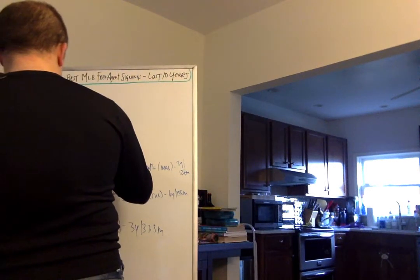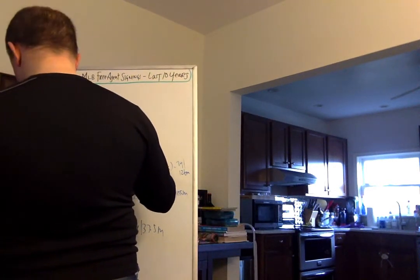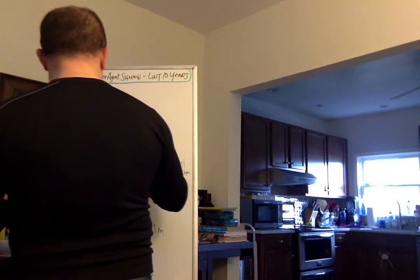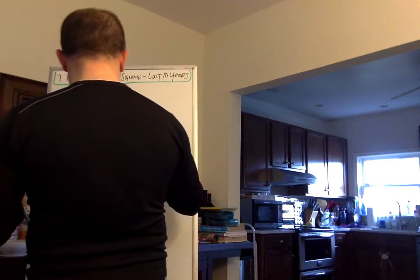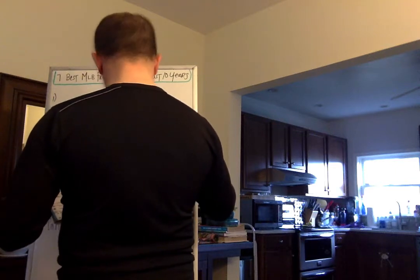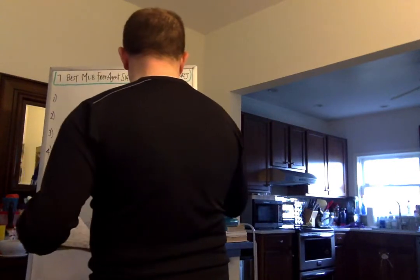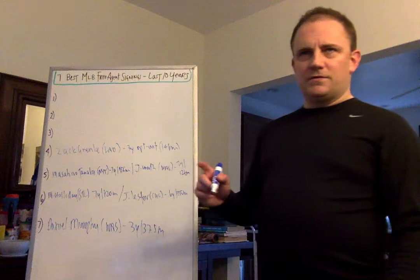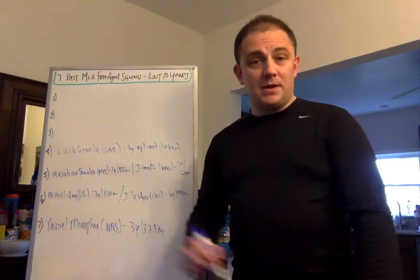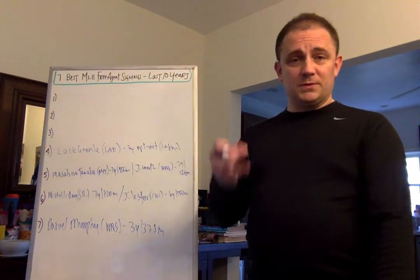Number four, and this is a short-term contract. But oh my God. Well, actually, it was a longer contract but it had an opt-out. It was a $146 million contract. I think it was for five or six years with the Dodgers, Zack Greinke. He opted out after three years.